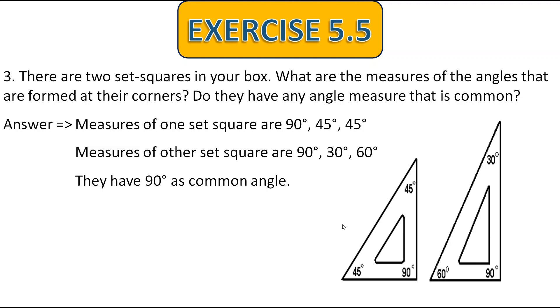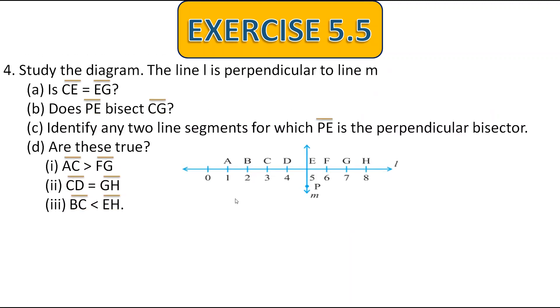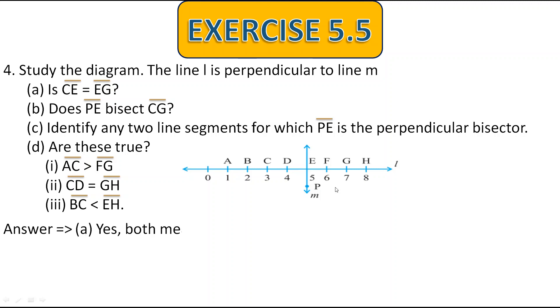Now let's move to the fourth question. Study the diagram — they have given a diagram. The line L is perpendicular to the line M. Is CE equal to EG? CE is of two units and EG is also two units. Therefore, as both measure two units, CE is equal to EG.